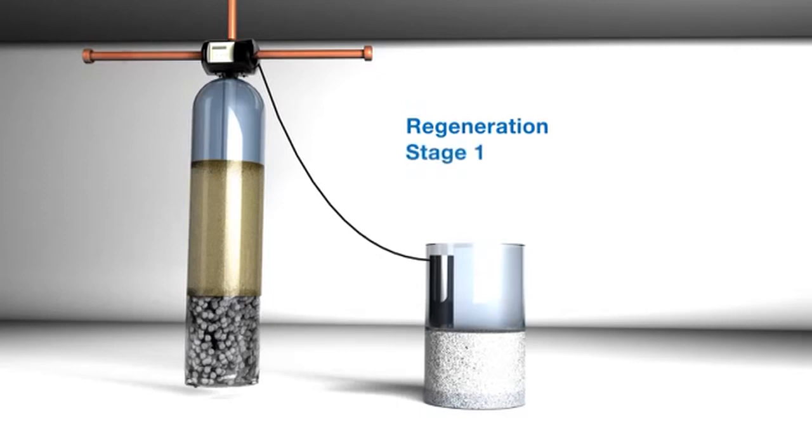Stage 1 requires us to loosen or expand the resin bed. In this stage, water is brought in and diverted down the center tube. The water is then forced up through the resin bed. As the water pushes up through that bed, the resin expands into the freeboard space. This is called stratification.